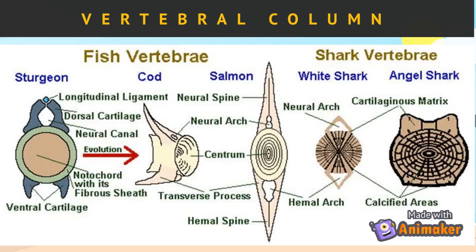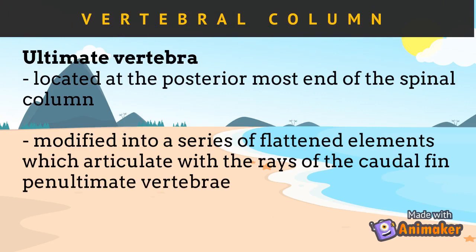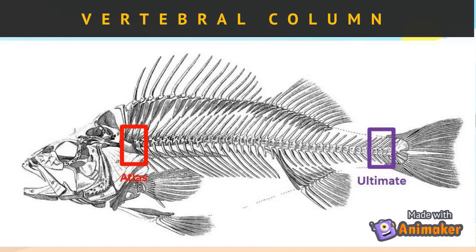Another important component of the vertebral column is the ultimate vertebra. The ultimate vertebra is located at the posteriormost end of the spinal column. It is modified into a series of flattened elements which articulate with the rays of the caudal fin, such as penultimate vertebrae, hypurals, epurals, and the urostyle. This figure shows the location of the atlas — next behind the skull — and the ultimate vertebra, which is near the caudal fin.